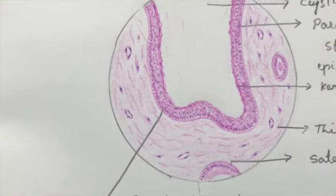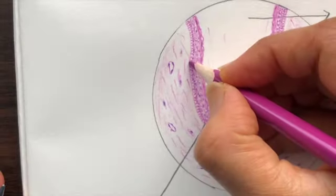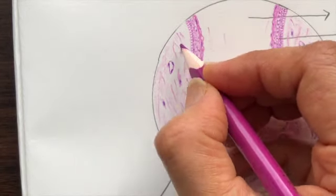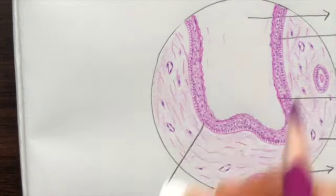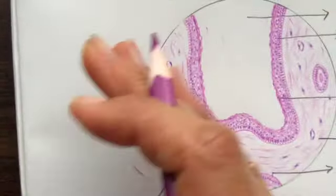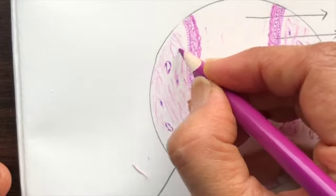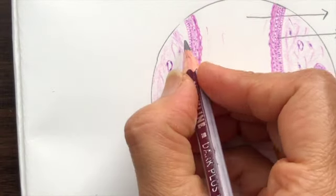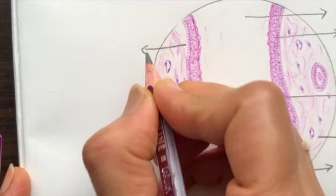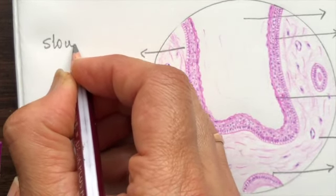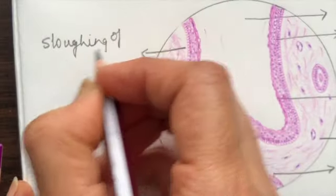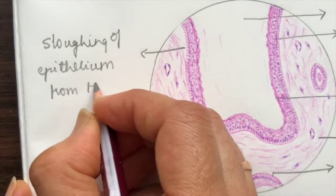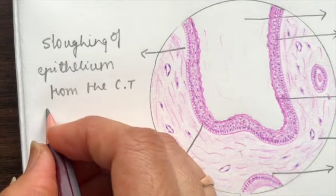Now, given a chance, I would like to show the fragile interface between epithelium and connective tissue. So you can separate a portion of epithelium and connective tissue here with a faint separation line like this and say that there is sloughing of epithelium from the connective tissue because of fragile interface.